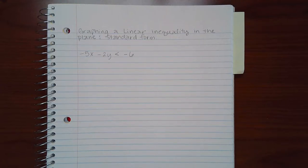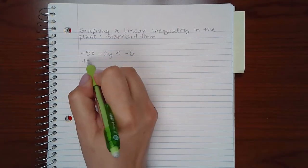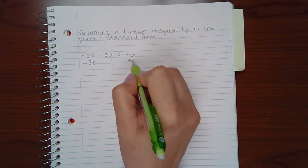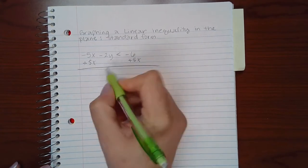Graphing a linear inequality in the plane standard form. The first thing I need to do before I can graph anything is put it in its slope-intercept form. So I'm going to add 5x to both sides.